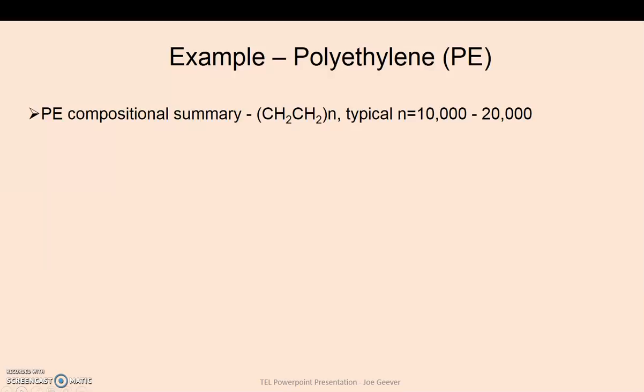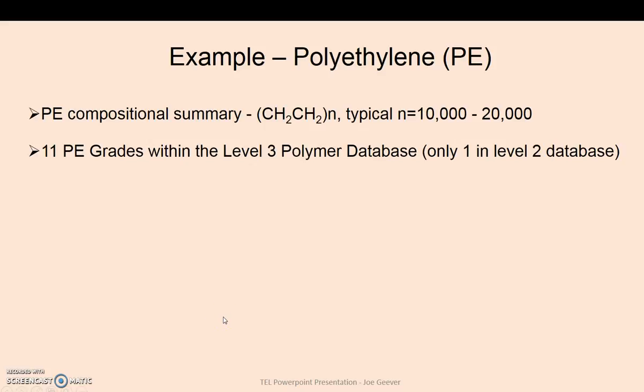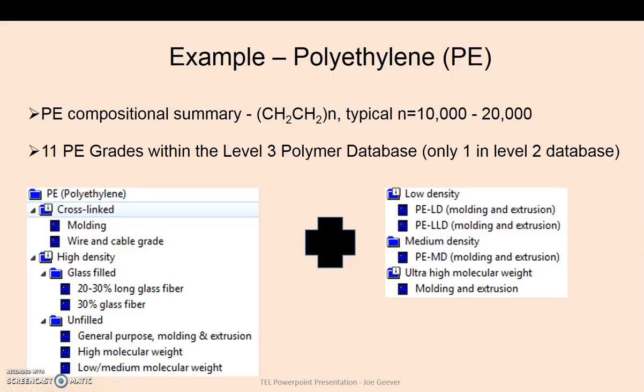Furthermore, polyethylene is a linear thermoplastic and there's various grades available, ranging from low density polyethylene, which has a melting point of approximately 108 degrees, right up to the ultra-high molecular weight polyethylene, which will have molecular weights of 3 to 6 million. And these materials can't be melted and are used in applications such as hip replacements. And there's 11 polyethylene grades within the Level 3 polymer database, whereas there was only one in the Level 2 database. And these are outlined below.